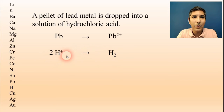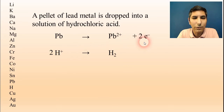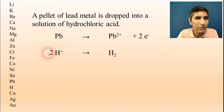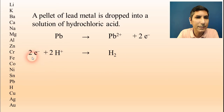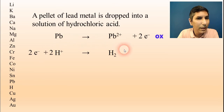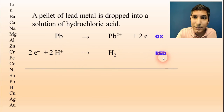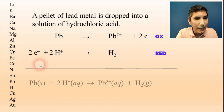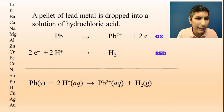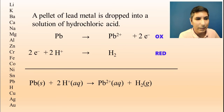Balancing the half reactions: for lead, we have 0 vs +2, so we add two electrons on the right. For the hydrogen half reaction — now written as 2H+ since we multiplied by two — we have +2 vs 0, so we add two electrons on the left. Lead is being oxidized, hydrogen is being reduced. The two electrons cancel when added together. The overall balanced equation is: Pb + 2H+ → Pb2+ + H2.